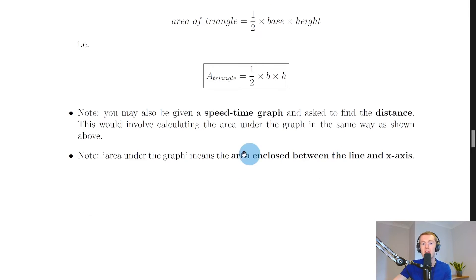Note that you may also be given a speed time graph and asked to find the distance so that would be the scalar equivalent of this velocity time graph. If you were given a velocity time graph you would be finding displacement but if you were given a speed time graph you would be finding distance. This would involve calculating the area under the graph in the same way as shown above.